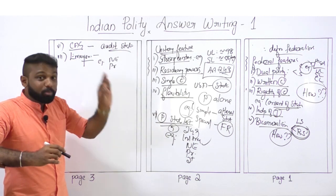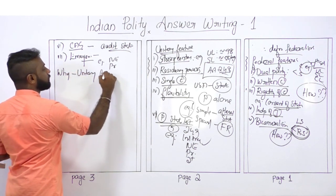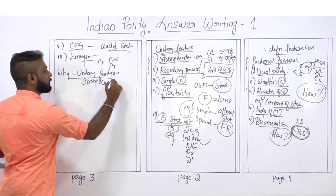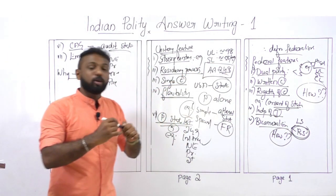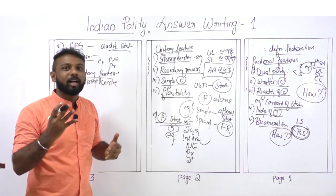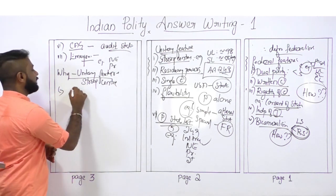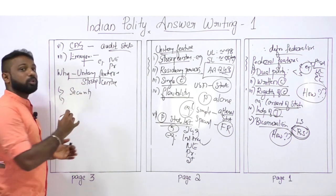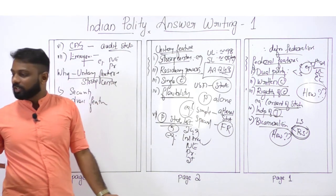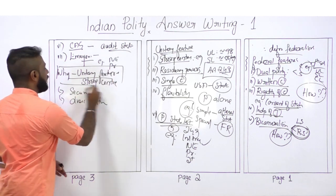This constitutes the body part. One more part to address is why we go for a strong center. It is now proven that even though India is a federal country, we have more bias towards a strong center. We must explain the reasons: to ensure the security of the nation, to accommodate diverse features of our diverse country, and to maintain the unity and integrity of the country.